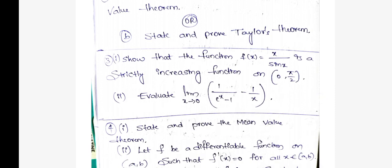Next question: show that the function f of x equals x by sin x is a strictly increasing function on 0 comma pi by 2. Second, evaluate limit x tends to 0, 1 by e power x minus 1, minus 1 by x.